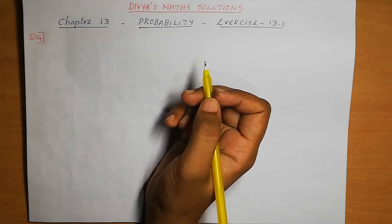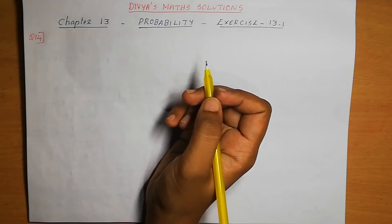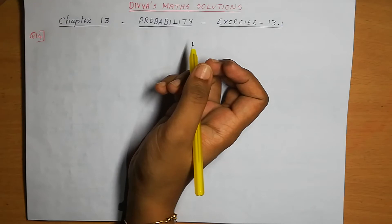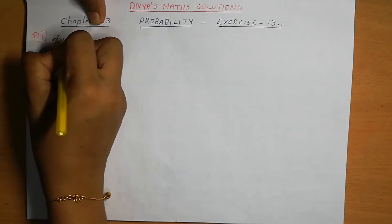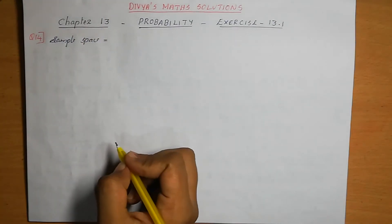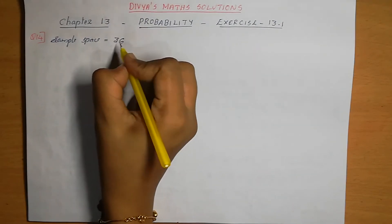So here, two dice are thrown and the numbers appearing are different only. In both dice the number appearing is different, and the probability of the event — the sum of the numbers on the dice — is given as a conditional probability. The two dice are thrown, so the sample space contains 6 × 6 = 36 elements.